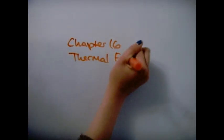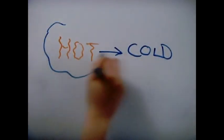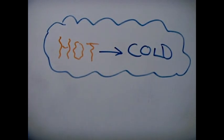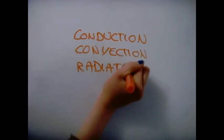Chapter 16 Thermal Energy. Heat energy is transferred from places with a high temperature to places with low temperatures. Heat can be transferred through conduction, convection and radiation.